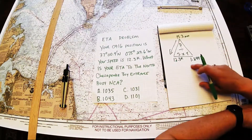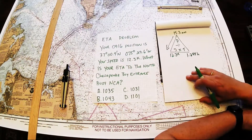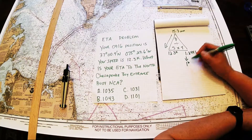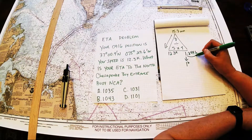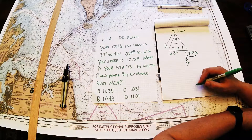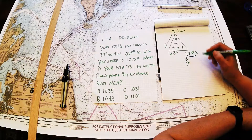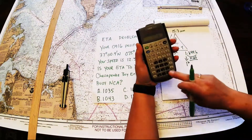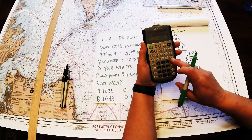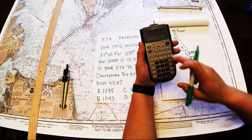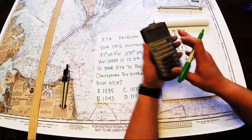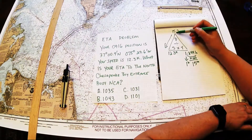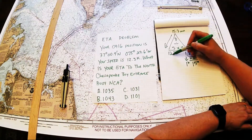I can't use that decimal form directly, so I need to convert it into hours and minutes. Bring down the hour — that doesn't change. The 0.244 needs to be converted into minutes. When going from a decimal to minutes, we multiply by 60. Back to the calculator: 0.244 times 60 gives 14.64, which I'll round to 15. So 1 hour and 15 minutes is how long it's going to take to go 15.3 miles at 12.3 knots.